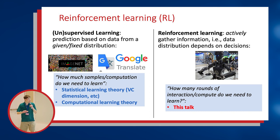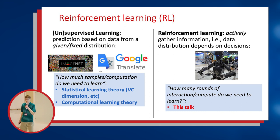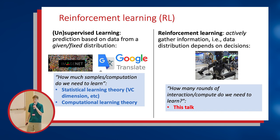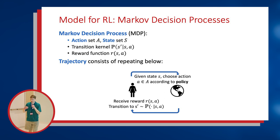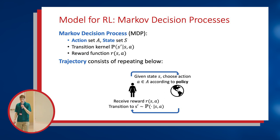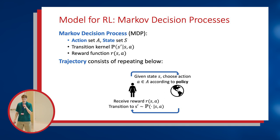The theoretical questions we ask are: how many rounds of interaction or how much computation do we need in order to perform a learning task? I'm a theorist, and in order to study these questions from a theoretical standpoint we need some model to work in. The model that we use is the model of Markov decision processes, or MDPs.